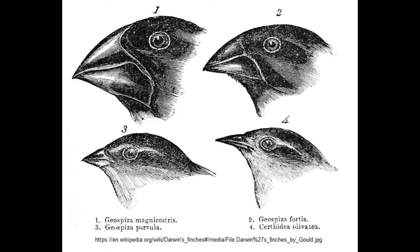Darwin's finches, another icon of evolution, are species of birds on the Galapagos Islands that are very similar except for the size and shape of their beaks. It's thought — and quite possible — that they evolved from a common ancestor because of having to eat different foods on different islands. But the actual evidence shows only that the beaks can change over a matter of years based on climate and diet. The changes are temporary; they oscillate back and forth and don't go anywhere. So, as evidence for the origin of species, Darwin's finches really don't work.